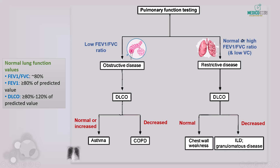This diagram outlines how we use pulmonary function testing to differentiate between obstructive and restrictive lung diseases. The key parameter is the FEV1/FVC ratio: a low ratio indicates obstructive disease, while a normal or high ratio points toward restrictive disease. We also evaluate DLCO — in obstructive disease, a normal or increased DLCO suggests asthma, whereas a decreased DLCO suggests COPD, specifically emphysema. In restrictive disease, decreased DLCO suggests interstitial lung disease.